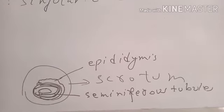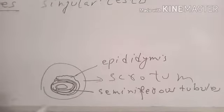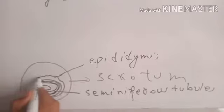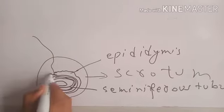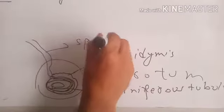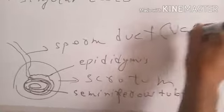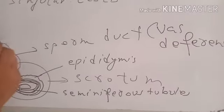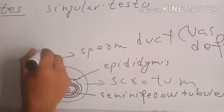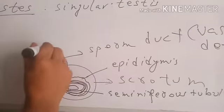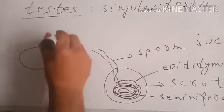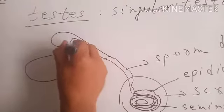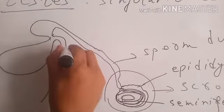When sperms are about to be ejaculated, they are released from the epididymis and enter into a duct called the sperm duct or vas deferens. This sperm duct meets the urethra near the urinary bladder. The sperm duct goes near to the urinary bladder and joins it, and the urinary bladder empties into the urethra.